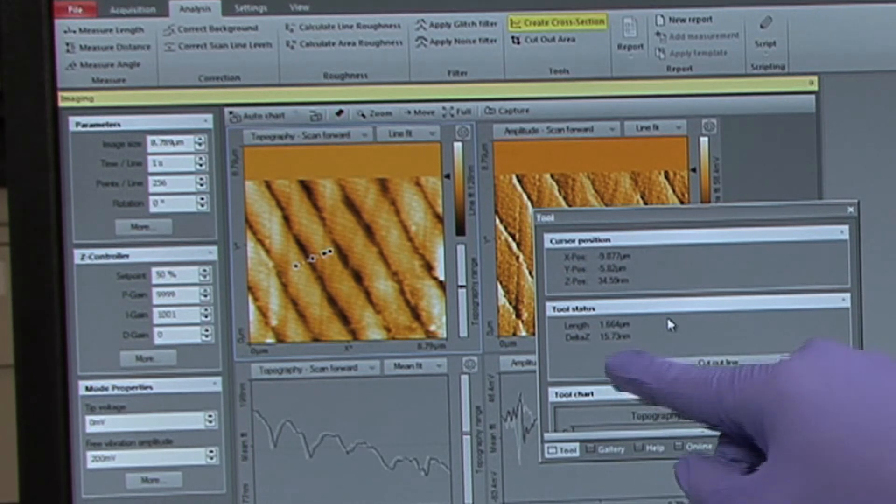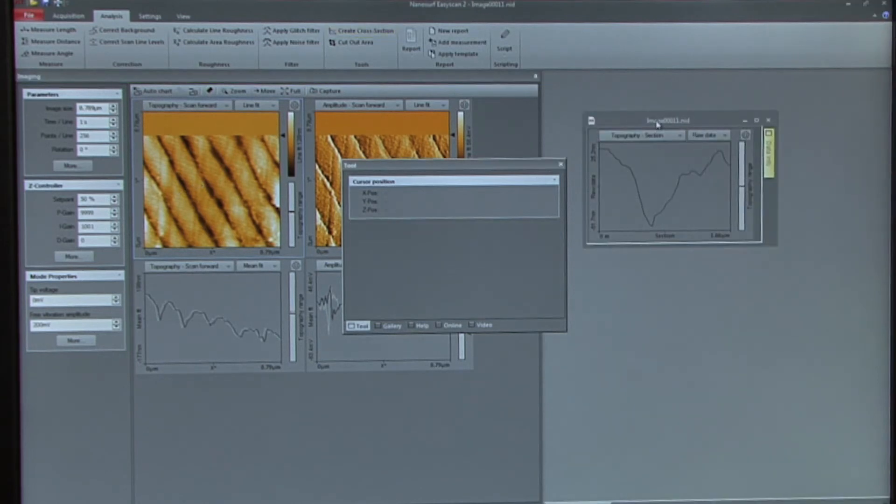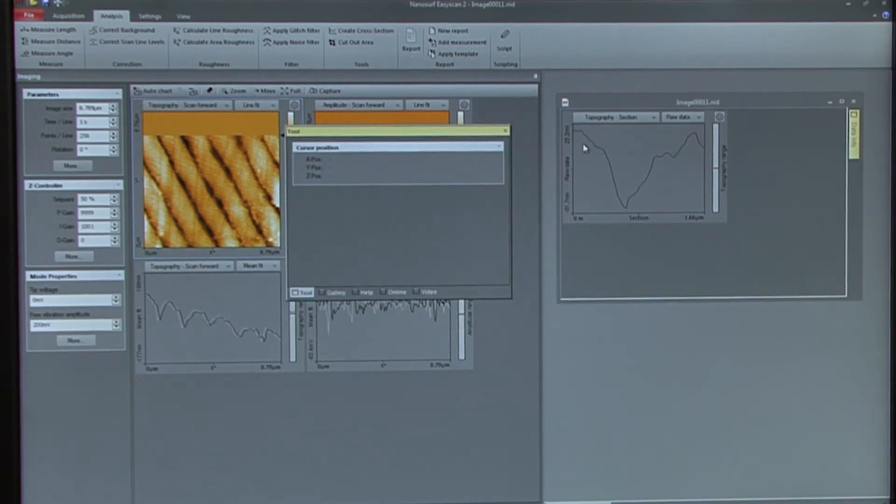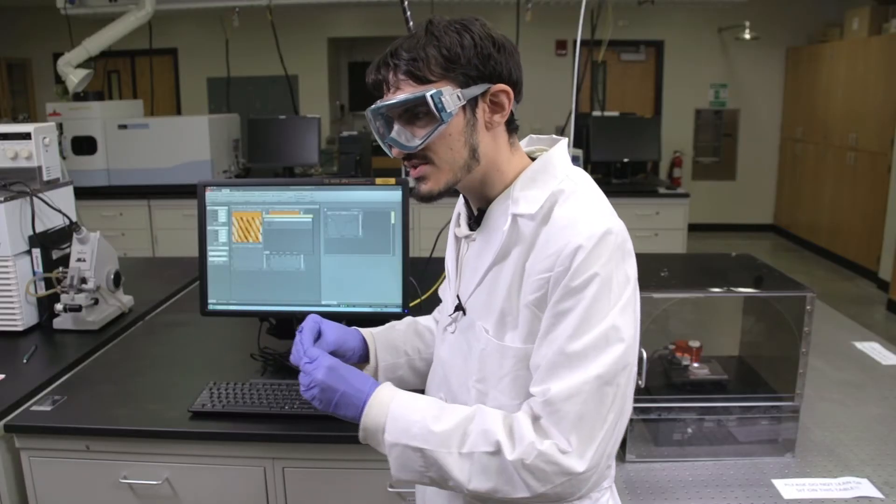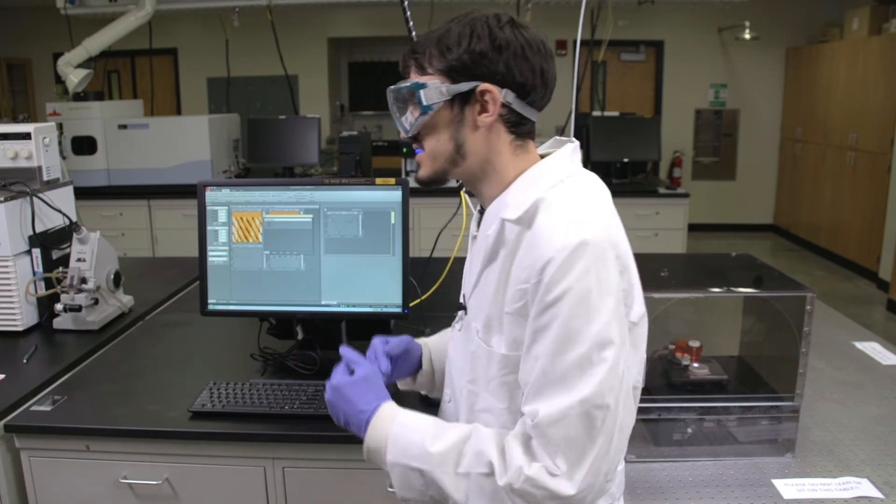You'll notice on the tool status, where it says delta Z, it is averaging the height of the features within this given area that you've clicked on. When you click cut out line, it will create an image, and you'll be able to see the topography as a cross section. You'll want to do this for several areas and several ridges, and write down the numbers of delta Z in order to get an average for these values.